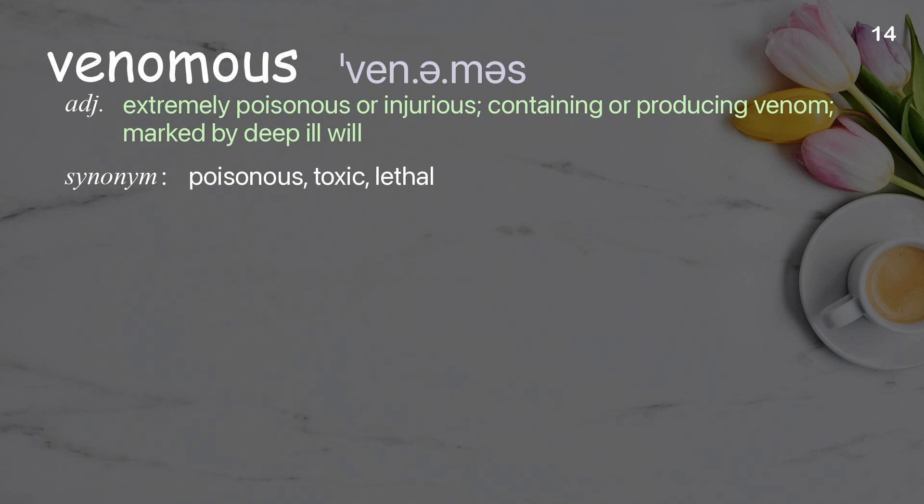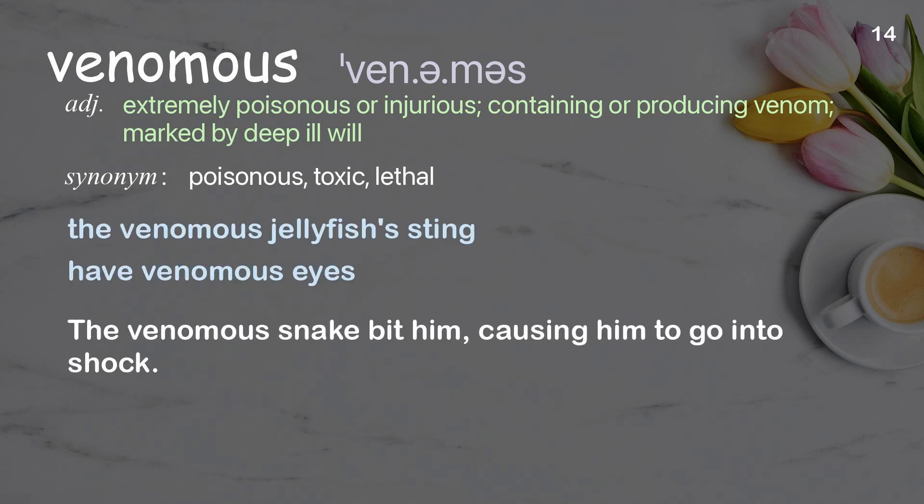Venomous: extremely poisonous or injurious, containing or producing venom, marked by deep ill will. Examples: the venomous jellyfish's sting, have venomous eyes. The venomous snake bit him, causing him to go into shock.